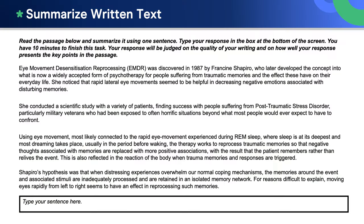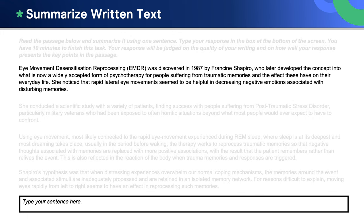How did you go? Remember, there is no one right answer — it can be written in different ways. Before we write our summary, let's read the text together. Eye movement desensitization reprocessing, EMDR, was discovered in 1987 by Francine Shapiro, who later developed the concept into what is now a widely accepted form of psychotherapy for people suffering from traumatic memories and the effect these have on their everyday life.